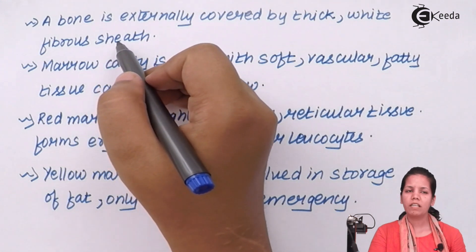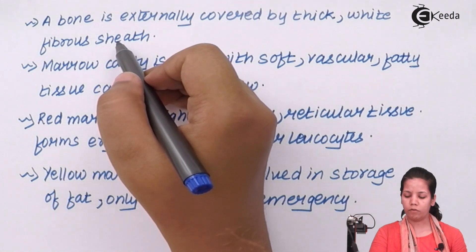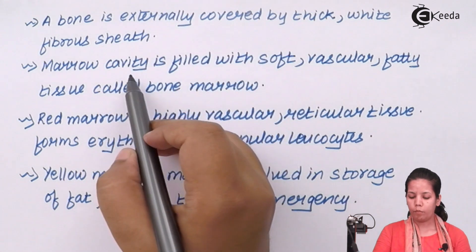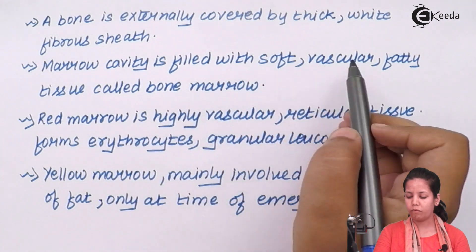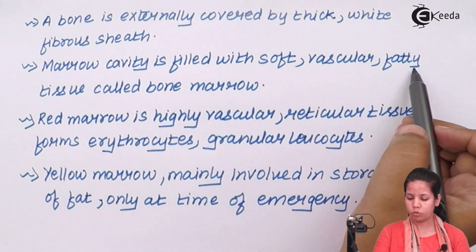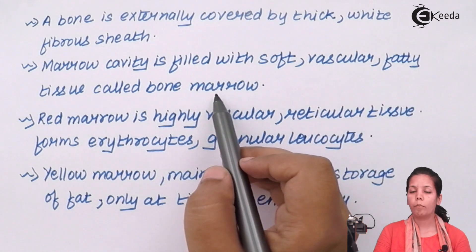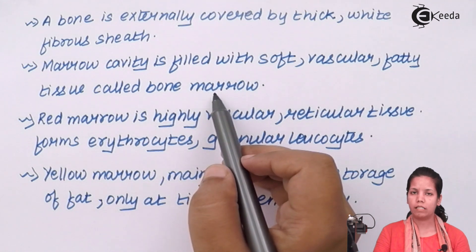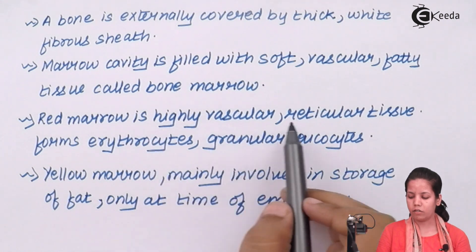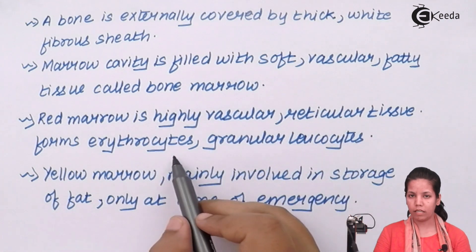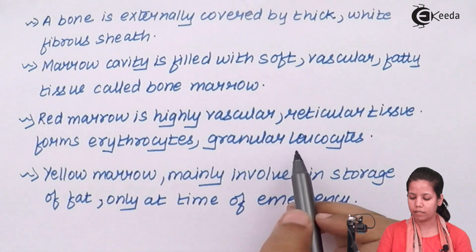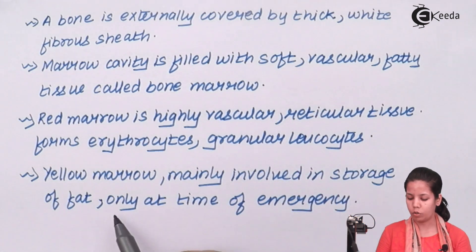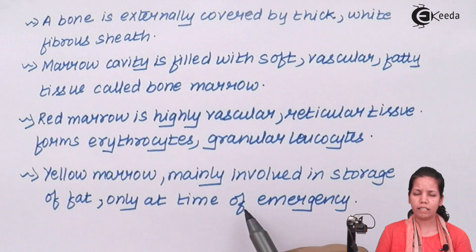This white fiber sheet basically gives that protective layer to the bone. Marrow cavity is basically filled with soft vascular and fatty tissues which together constitute to form bone marrow. This is the place where your RBCs, WBCs, platelets all form. Red marrow is highly vascular reticular tissue that forms erythrocytes and granular leukocytes, whereas the yellow marrow is basically involved in storage of fat that's only at the time of emergency or when it is needed.